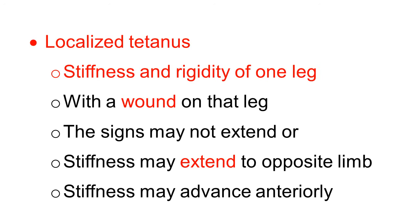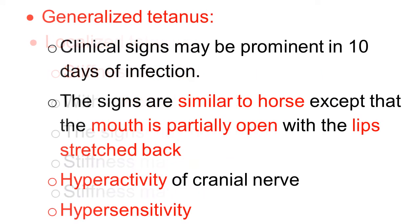If the toxin is more, the stiffness may advance anteriorly and may extend to the whole body. When neurotoxin quantity secreted by the organism is more, it is absorbed through the limb, goes into circulation to the central nervous system, and causes generalized tetanus symptoms.